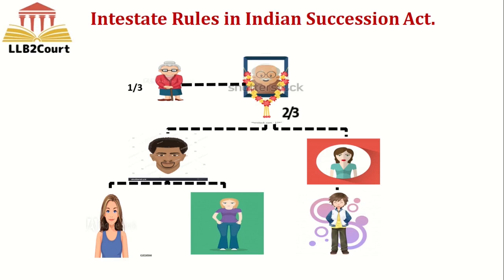When the parents are alive, the grandchildren won't get the property, because the deceased is survived by his son and daughter. The 2/3 share will be divided equally among the children — that is, his son and daughter — so each will get 1/3 of the 2/3 share.